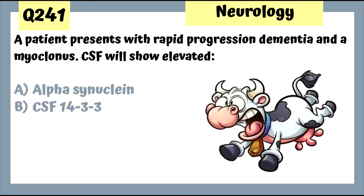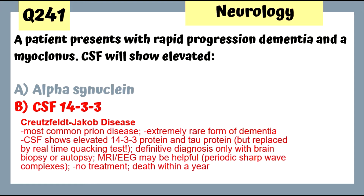Question 241: A patient with rapid progression dementia and myoclonus — CSF will show elevated 14-3-3 protein. Rapid dementia and myoclonus is pathognomonic for Creutzfeldt-Jakob disease. This finding has been replaced by the real-time quaking test in the CSF, but we still need to be aware of the 14-3-3 finding.